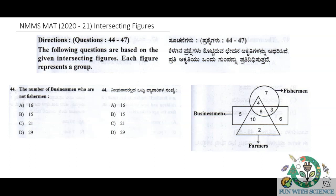Question number 44: the number of businessmen who are not fishermen. The rectangle represents the businessman and the circle represents the fisherman. In this question, we need to find businessmen who are specifically not fishermen.